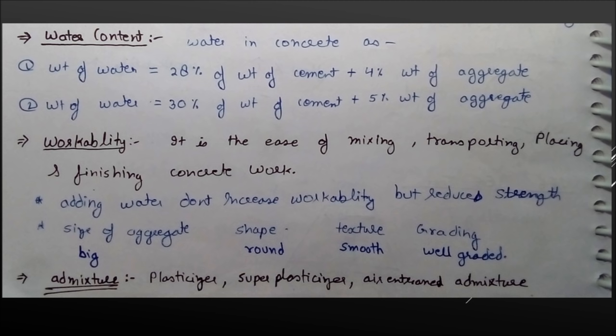Workability refers to how easily we can mix, transport, place and finish concrete structure. To make workable mix, we control aggregate size. The aggregate shape should be round, the texture should be smooth, and aggregate should be well-graded, meaning it should have large, medium-sized and small aggregates.